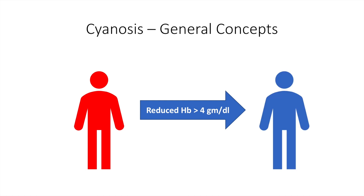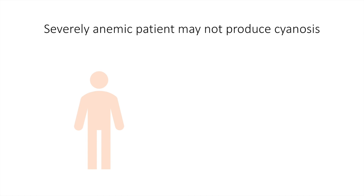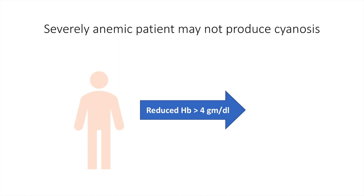However, a severely anemic patient with a hemoglobin of say 4 grams per deciliter doesn't have enough hemoglobin to produce enough reduced hemoglobin. As a result, this patient may not manifest cyanosis. Conversely, a patient with polycythemia will manifest cyanosis even at levels of reduced hemoglobin lower than 4 grams per deciliter.